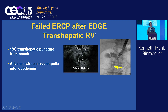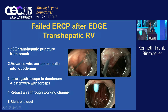What about a failed ERCP after the EDGE procedure? You can use standard approaches such as a transhepatic rendezvous. We start with a 19-gauge transhepatic puncture from the pouch, with a dilated intrahepatic duct visible. We pass our guide wire into the duodenum across the ampulla, then insert the gastroscope with a cap — not the duodenoscope — catch the wire with forceps, retract it through the working channel, and use this guide rail to pass instruments directly into the bile duct and stent it.